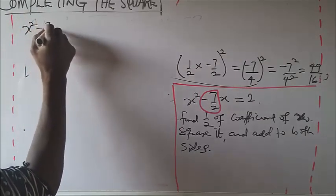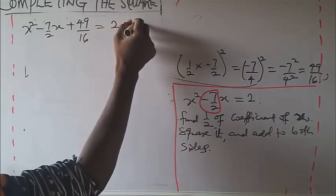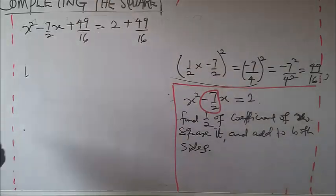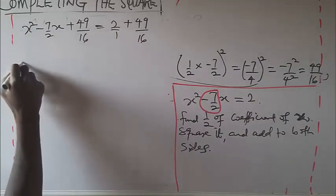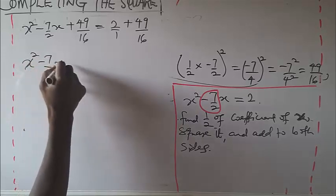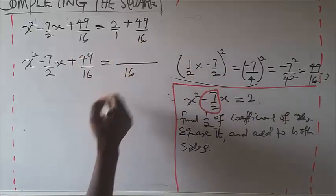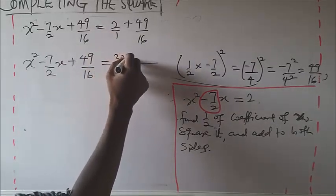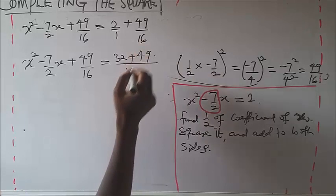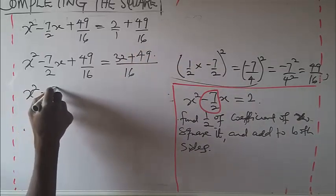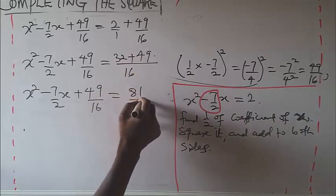So our equation becomes x² minus 7/2 x plus 49/16 equals 2 plus 49/16. The LCM of the right side is 16: 16 times 2 is 32, plus 49, giving us 81/16. So the expression becomes x² minus 7/2 x plus 49/16 equals 81/16.